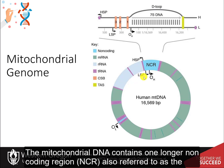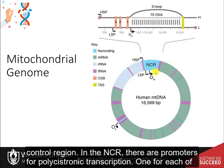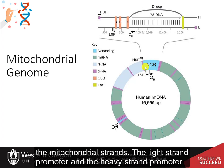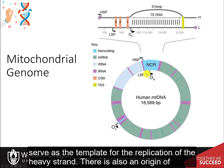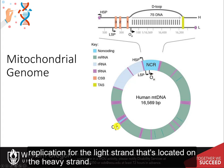The mitochondrial DNA contains one longer non-coding region, also referred to as the control region. In the NCR, there are promoters for polycistronic transcription, one for each of the mitochondrial strands: the light strand promoter and the heavy strand promoter. The NCR also harbors the origin of replication for the heavy strand, as the light strand will serve as the template for the replication of the heavy strand. There is also an origin of replication for the light strand that's located on the heavy strand.